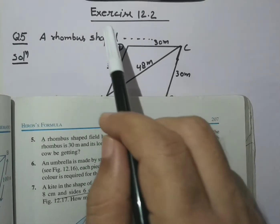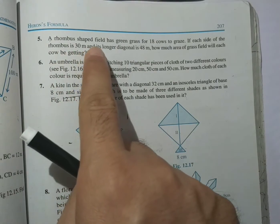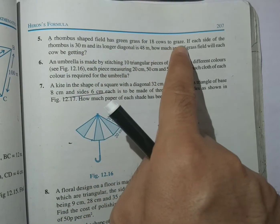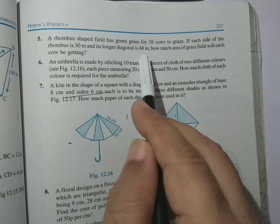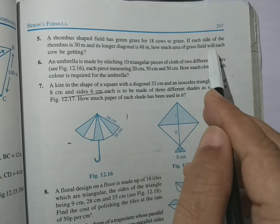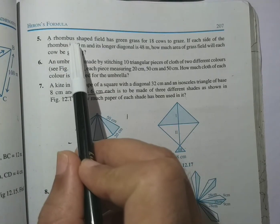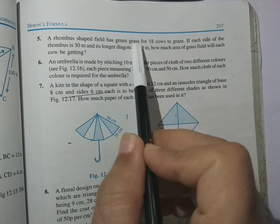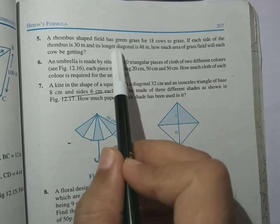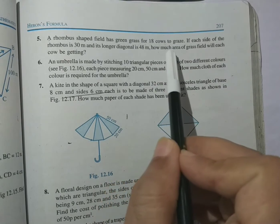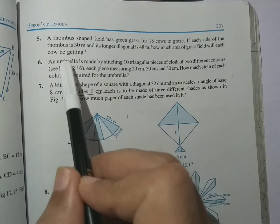Hello children, topic is Exercise 12.2, Question number 5. The question is: a rhombus shaped field has green grass for 18 cows to graze. If each side of the rhombus is 30 meters and its longer diagonal is 48 meters, how much area of grass field will each cow be getting? The field is rhombus type with green grass for 18 cows, side is 30 meters, longer diagonal is 48 meters. Question: how much area of grass for one cow is sufficient for grazing?